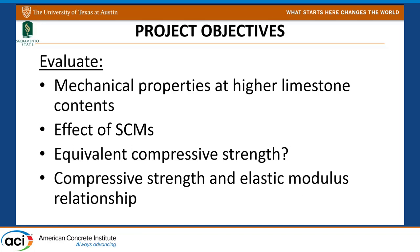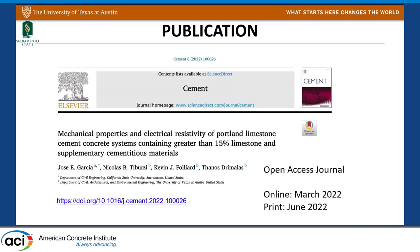The project objectives were to evaluate mechanical properties for lower-clinker systems, evaluate the effect of SCMs, see if we could achieve equivalent compressive strength even at low clinker dosages, and study the well-established relationships between compressive strength, tensile strength, and modulus of elasticity. This presentation can be seen in a journal paper published in the Cement journal, which is open access and free to view and download.